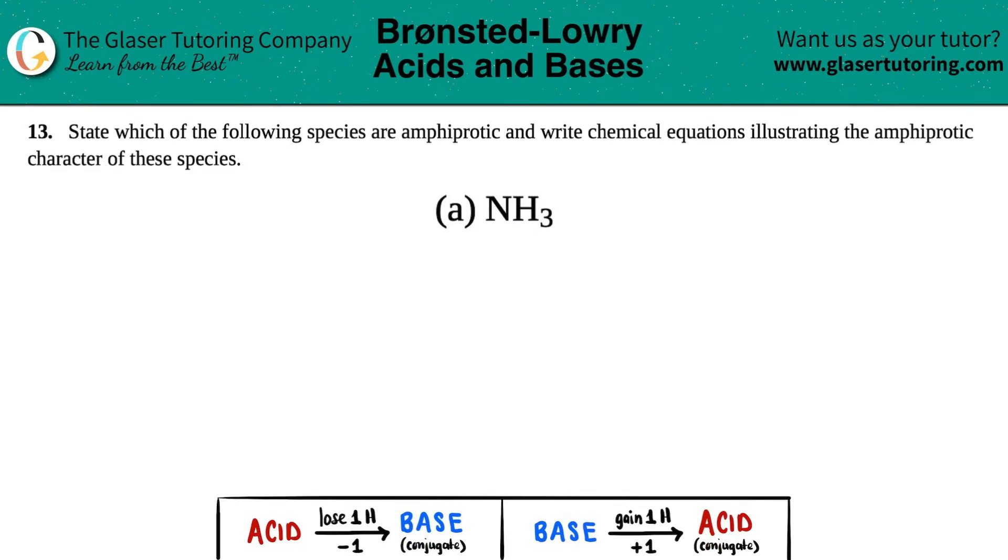Number 13: State which of the following species are amphiprotic and write chemical equations illustrating the amphiprotic character of these species. We have letter A, so we need to figure out if NH3, which is ammonia, is an amphiprotic species. Another word for amphiprotic is amphoteric, so your teacher or professor might use that word instead.